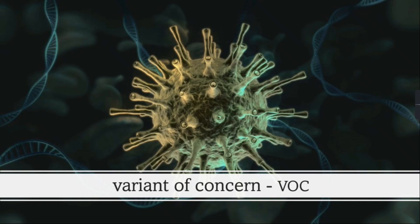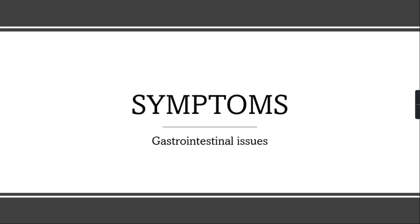There is another category called variant of interest. A variant of interest is where a particular strain will be classified once there are unique outbreak clusters. The Delta strain is classified as a variant of concern because it is highly harmful and dangerous, leading to more deaths.